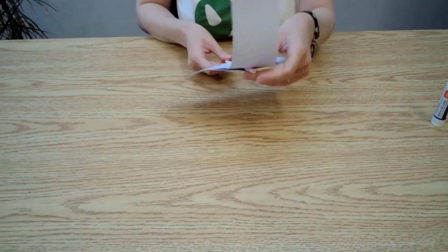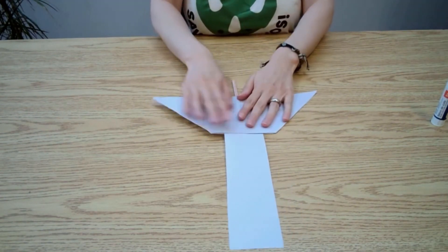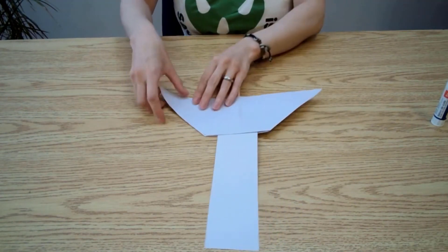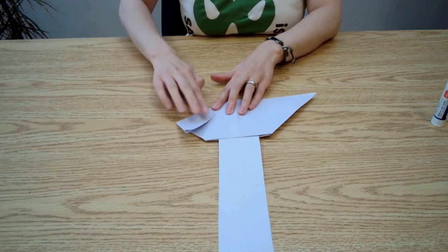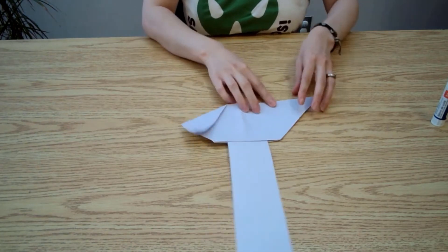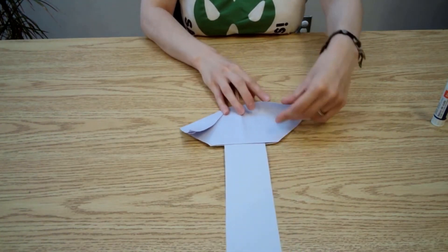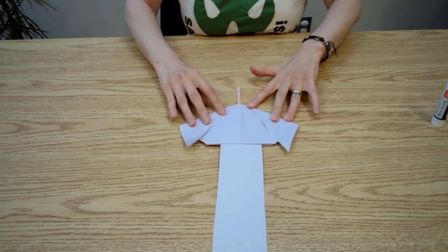Flip it over so that you can't see your straw underneath the trunk. Fold the remaining triangle corners down so they point the same direction as the trunk. You can glue these pieces down if you like.